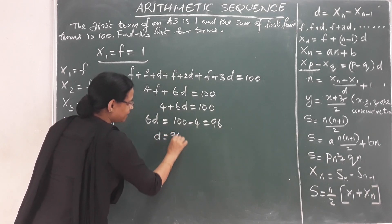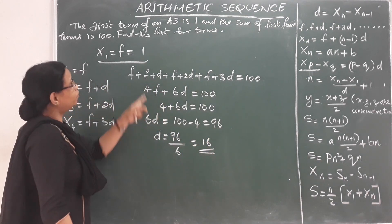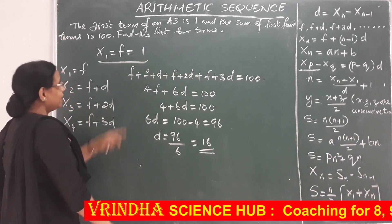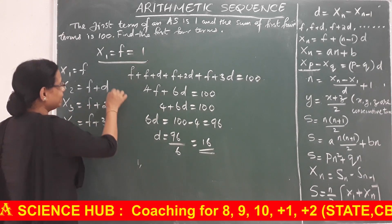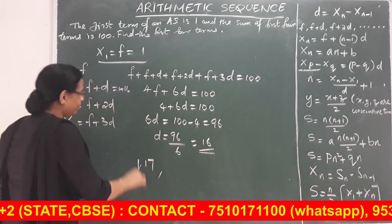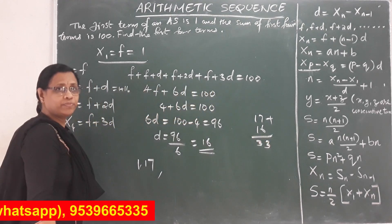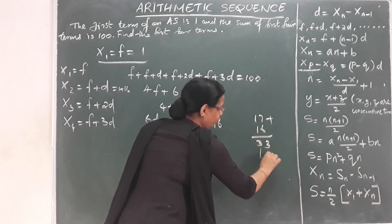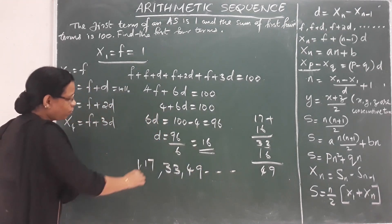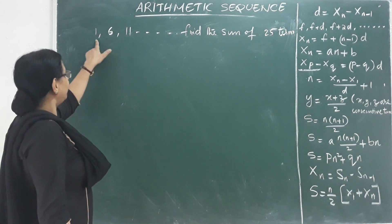So d equals 96 divided by 6, which equals 16. Now finding the first 4 terms: the first term is 1. Adding d each time: 1, then 1 plus 16 equals 17, then 17 plus 16, and so on. The first 4 terms are found by repeatedly adding d equals 16.